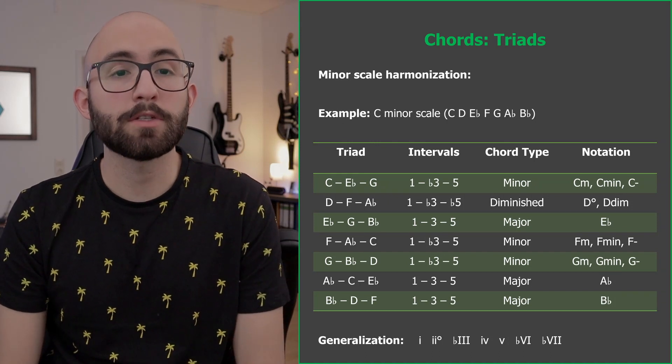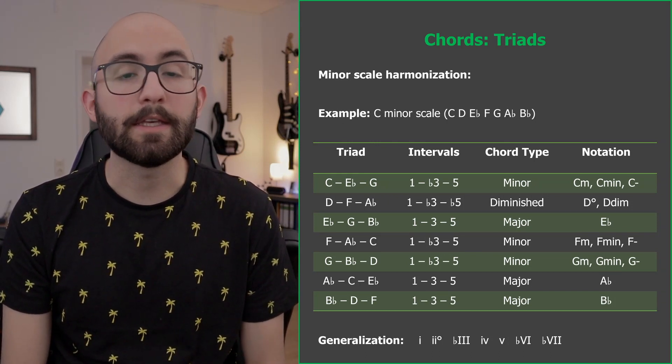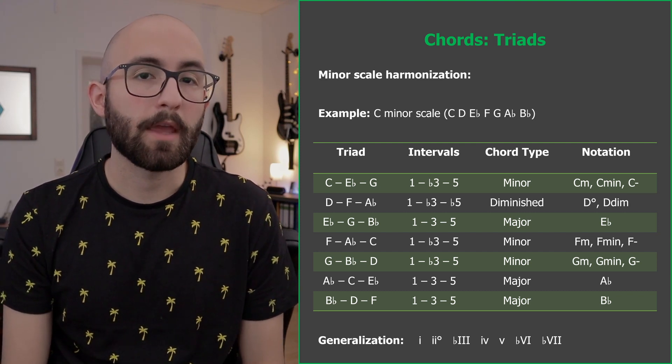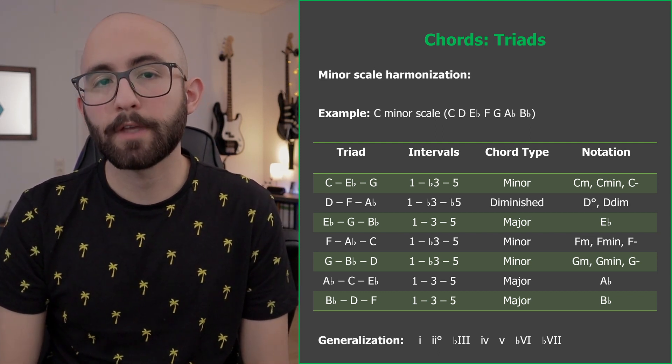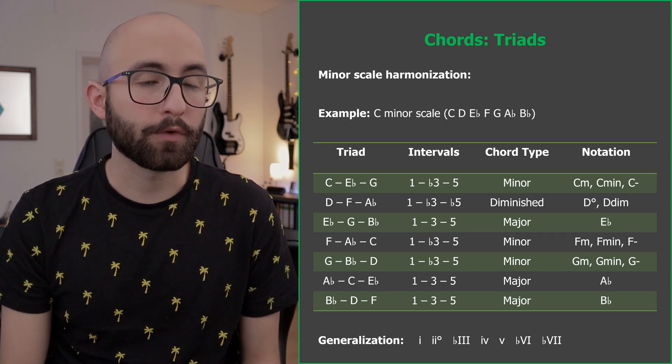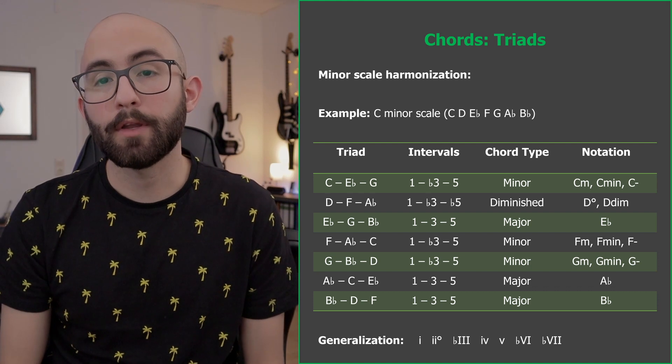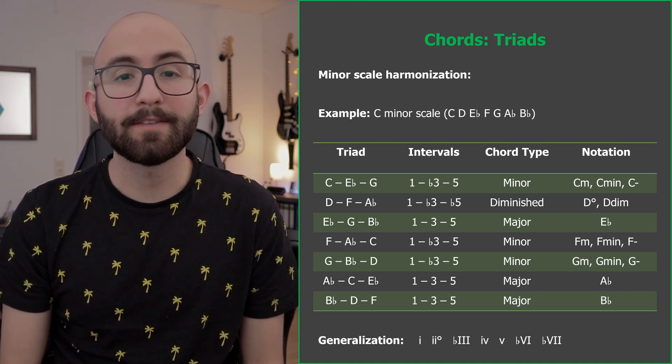In the same way that we harmonize a major scale, we can harmonize a minor one. Using the C minor scale as an example, after harmonization we get: C minor, D diminished, E flat major, F minor, G minor, A flat major, and B flat major. The chords from a minor scale follow a pattern: the first is minor, the second is diminished, the third is major, the fourth and fifth are minor, and the sixth and seventh are major. The chords obtained after harmonizing a scale are known as diatonic chords — knowing the key tells you which chords belong together and will sound good with each other.